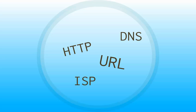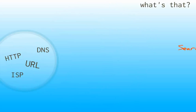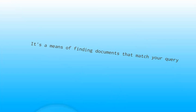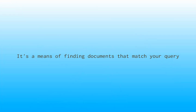So we want to find stuff — we start with a web browser, and then what you really need is a search tool. It's a means of finding documents that match your query. We've already looked at search tools this quarter: the library's catalog is a search tool for finding books, and periodical databases like ProQuest Research Library and Academic Search Premier are search tools for finding magazine, newspaper, and journal articles. When we're talking about searching on the internet, it's the same concept.